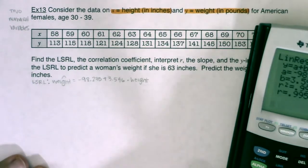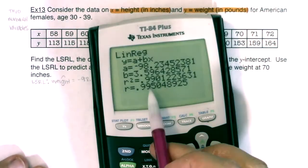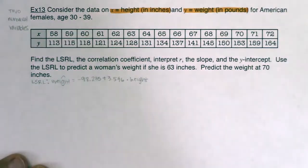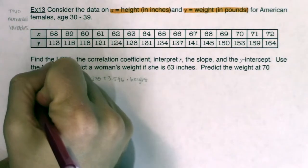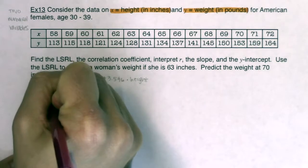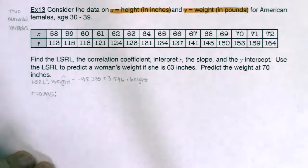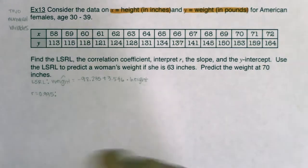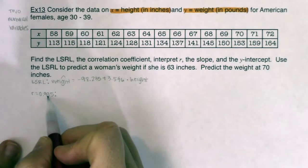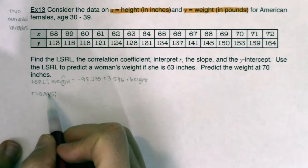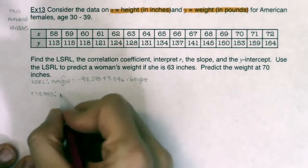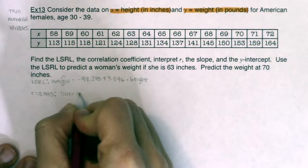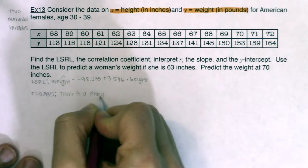My r = 0.995. To interpret r, you owe me three adjectives plus context: whether r is positive or negative, the word 'linear,' and whether it's strong, moderate, or weak. Since r = 0.995, this is positive, linear, and very close to one — so there is a strong positive linear relationship between height and weight for American females in their 30s.